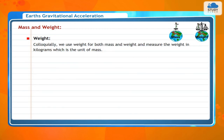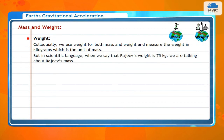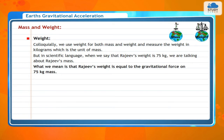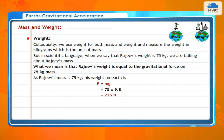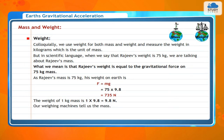Colloquially, we use weight for both mass and weight and measure weight in kilograms. But in scientific language, when we say Rajiv's weight is 75 kg, we are talking about his mass. Rajiv's weight is actually the gravitational force on 75 kg: F = Mg = 75 × 9.8 = 735 Newton. The weight of 1 kg mass is 1 × 9.8 = 9.8 Newton. Weight machines tell us mass, and two-scale balances in shops compare two masses.